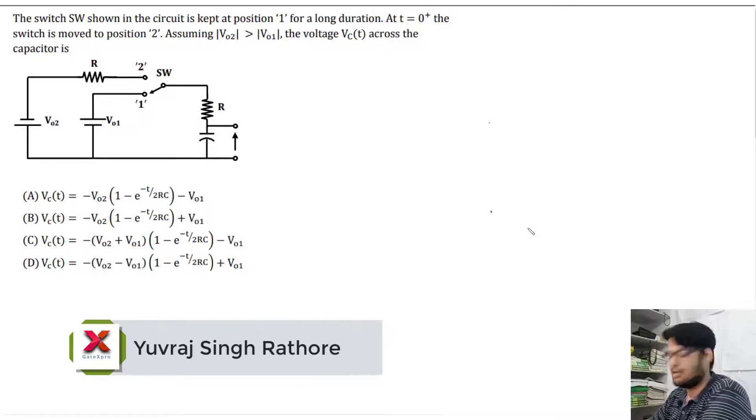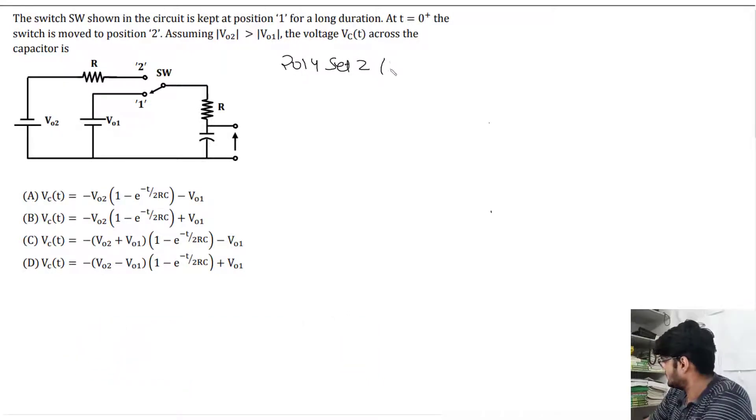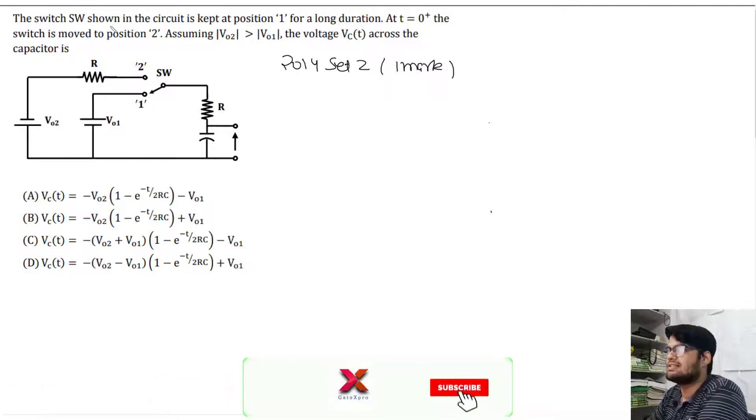Hello everyone, welcome back to the channel. So next question: the switch SW shown in the circuit is kept at position 1. The switch goes to position 2 at t equals 0.